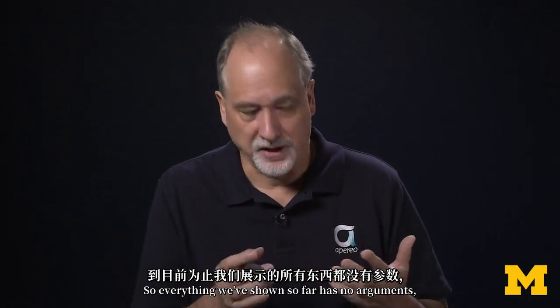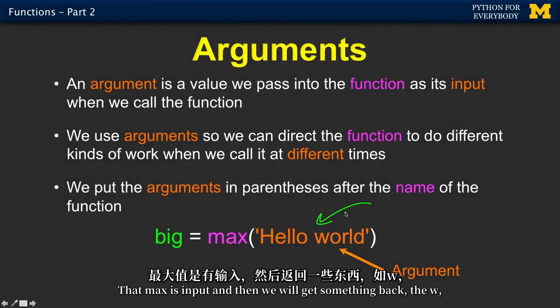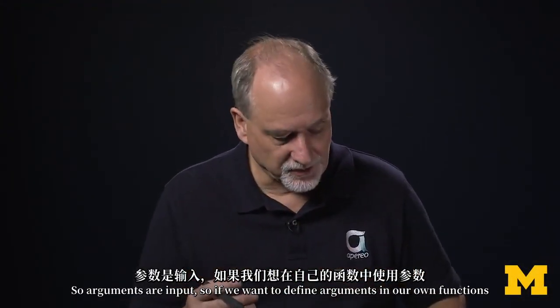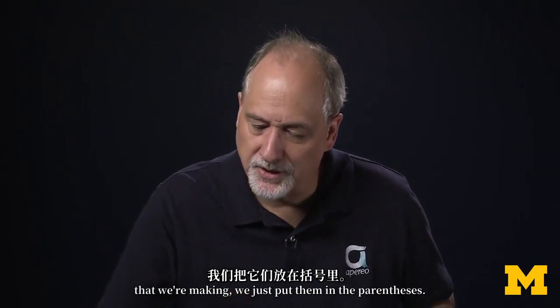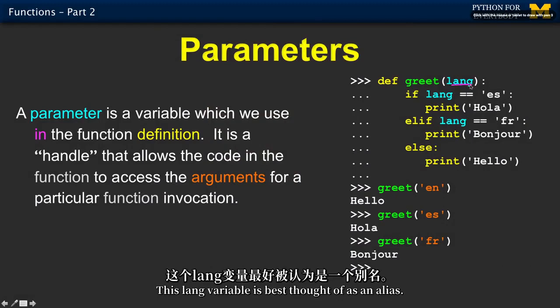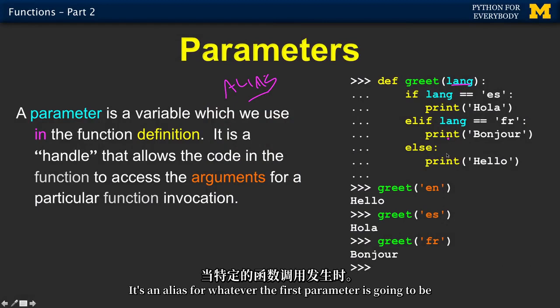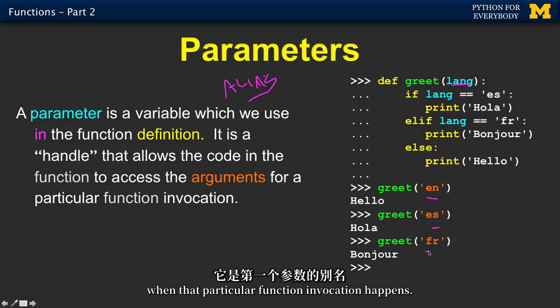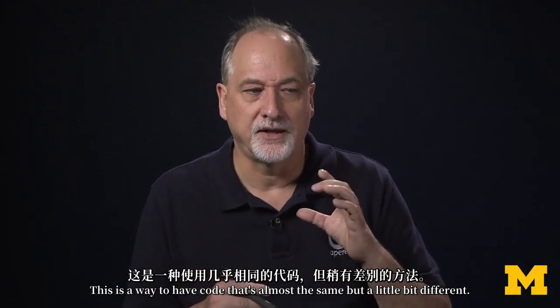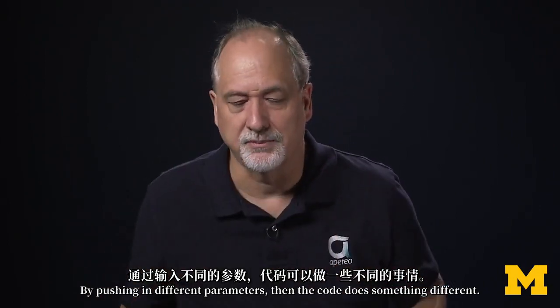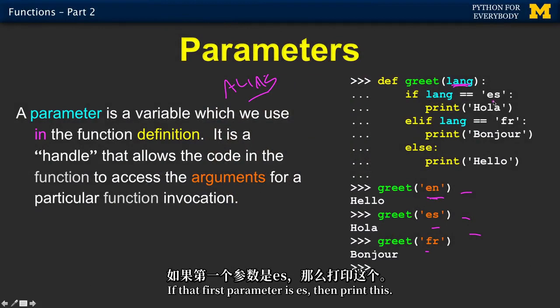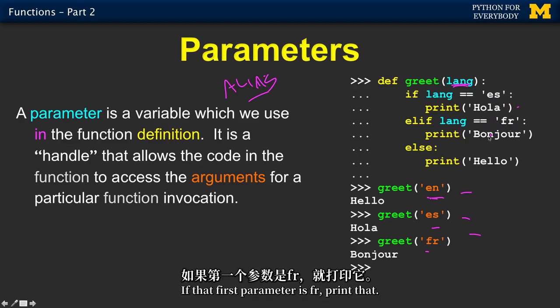So, everything we've shown so far has no arguments. Except this max did have an argument. That max is input. And then we will get something back, the w, and then the w gets stuck into big. So arguments are input. So if we want to define arguments in our own functions that we're making, we just put them in the parenthesis. Now, it's like a variable. We're choosing a variable name. But this variable sort of doesn't exist. This lang variable is best thought of as an alias. It's an alias for whatever the first parameter is going to be when that particular function invocation happens. So we're going to invoke this function three times. We're going to put in parentheses three different things. This is a way to have code that's almost the same, but a little bit different. By pushing in different parameters, then the code does something different.